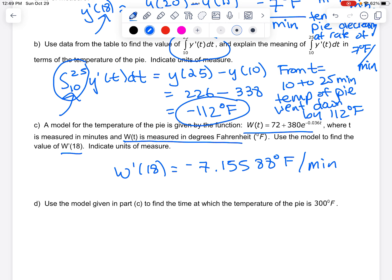Lastly, use the model in part C. So we're going to use the equation that was given. And I want to know the time at which the temperature is 300 degrees. So w is the temperature of the pie. So I want to know when is this equation going to be equal to 300 degrees?